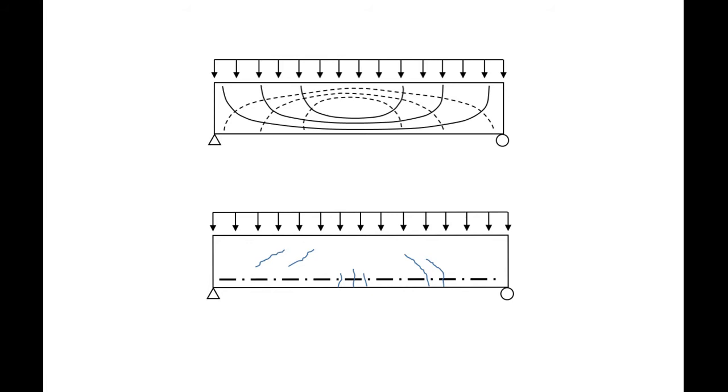If we take those principal tension and compression stresses and plot them around our cross section, it'll give us our stress distribution. So at each point we'll have some principal tension and compression stresses.